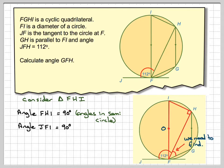So angle JFI, this angle here, is 90 degrees, and that's the tangent radius property.